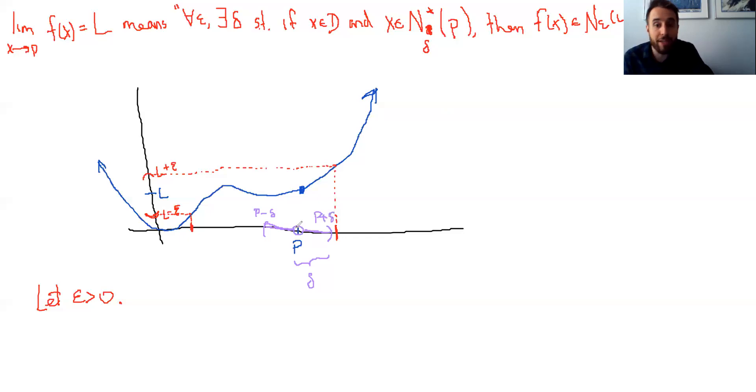Again, skipping the point P itself. So it's a deleted delta neighborhood. So this deleted delta neighborhood, we're saying that if we consider x values in the domain and within this deleted delta neighborhood, then those will map to points that are within our epsilon neighborhood in height. In other words, all of the points in this delta neighborhood are guaranteed to be within this epsilon neighborhood here.